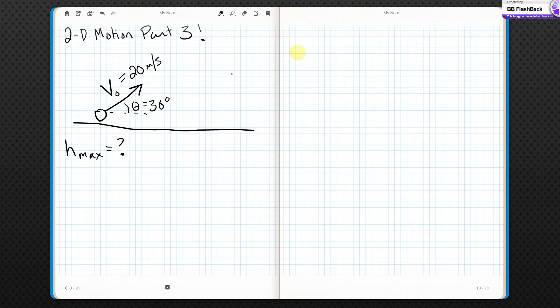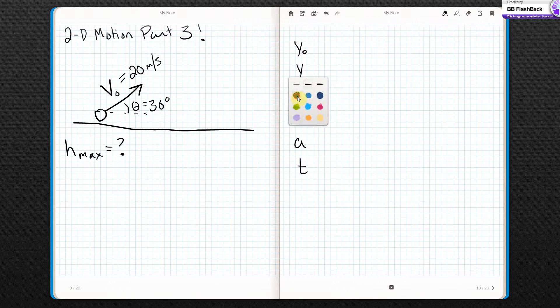I've got my stuff. What is it? Y naught, Y, V naught, V, A, and T. And you know what? I'm going to throw a little Y on here.